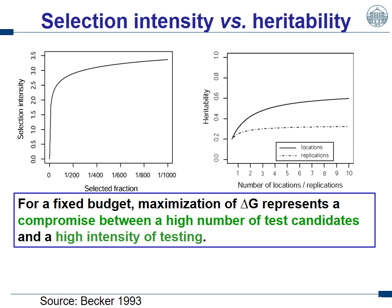Going back to the assumption that selection gain is increased when we increase selection intensity and heritability: the more lines we invest, the higher is our selection intensity. And the more locations and/or replications we use, the higher is our heritability. But with a fixed budget, a maximization of the selection gain represents a compromise between a high number of test candidates and a high intensity of testing. These are contradictory aims — we have to find a compromise.